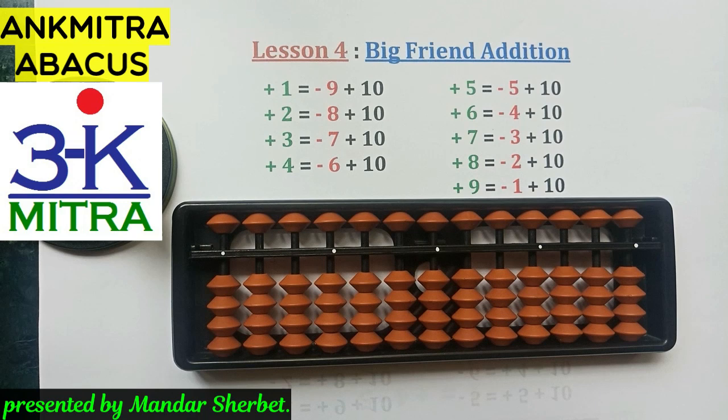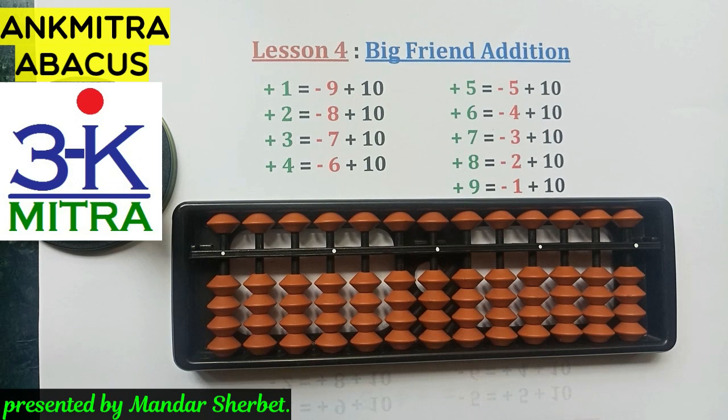Hello everyone, welcome to Anka Mitra's Abacus tutorial for lesson number four. In this we'll be studying how to do big friend addition. Before this, we have already seen lesson number one: identification of numbers, lesson number two: small friend addition, lesson number three: small friend subtraction. These three things have to be learned before we come to big friend addition, lesson number four.